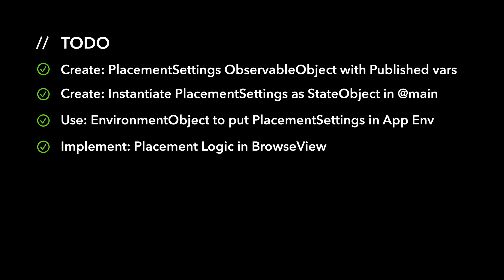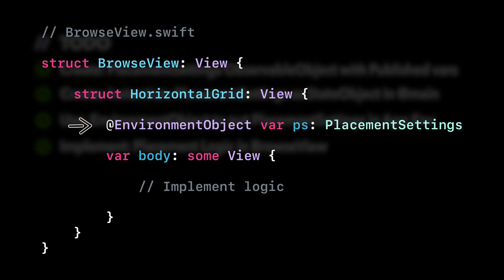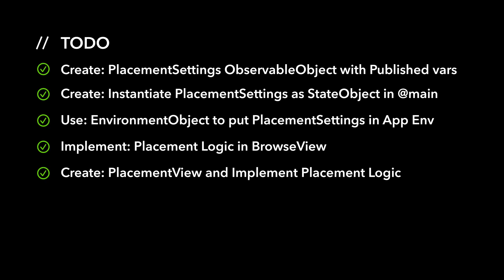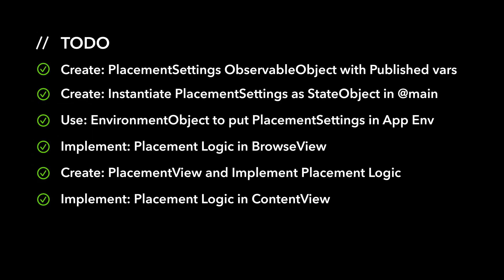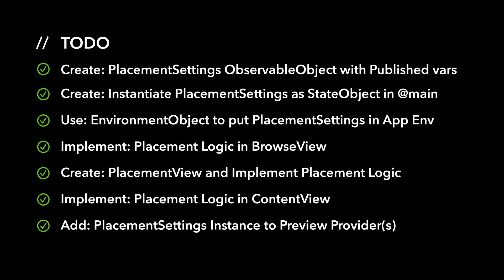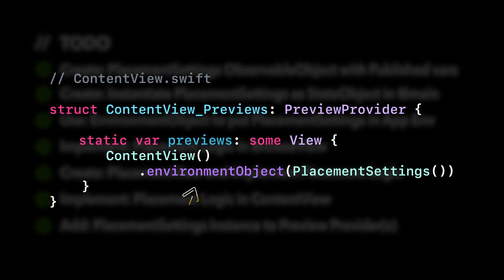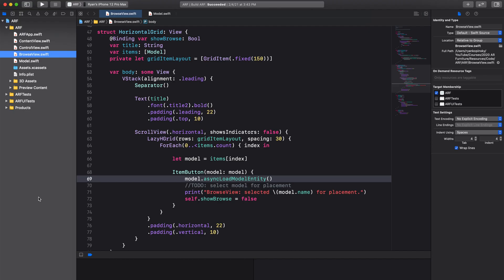Next, we'll implement our placement logic in BrowseView. To access our placement settings, we declare a property with the environment object attribute. Once we have our placement logic in BrowseView, we can create our placement view, which will display cancel and confirm buttons. Next, we can implement placement logic in content view. And finally, we'll need to add a PlacementSettings instance to the preview provider for any view that uses the PlacementSettings object or that has a descendant that uses the object. So without further ado, let's dive into the code.